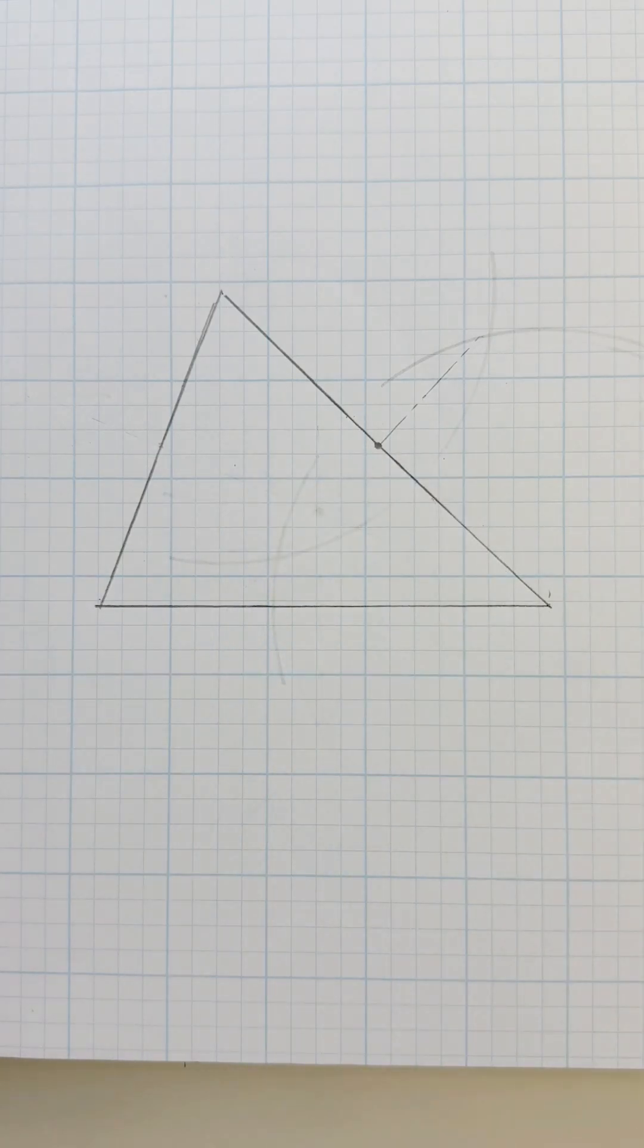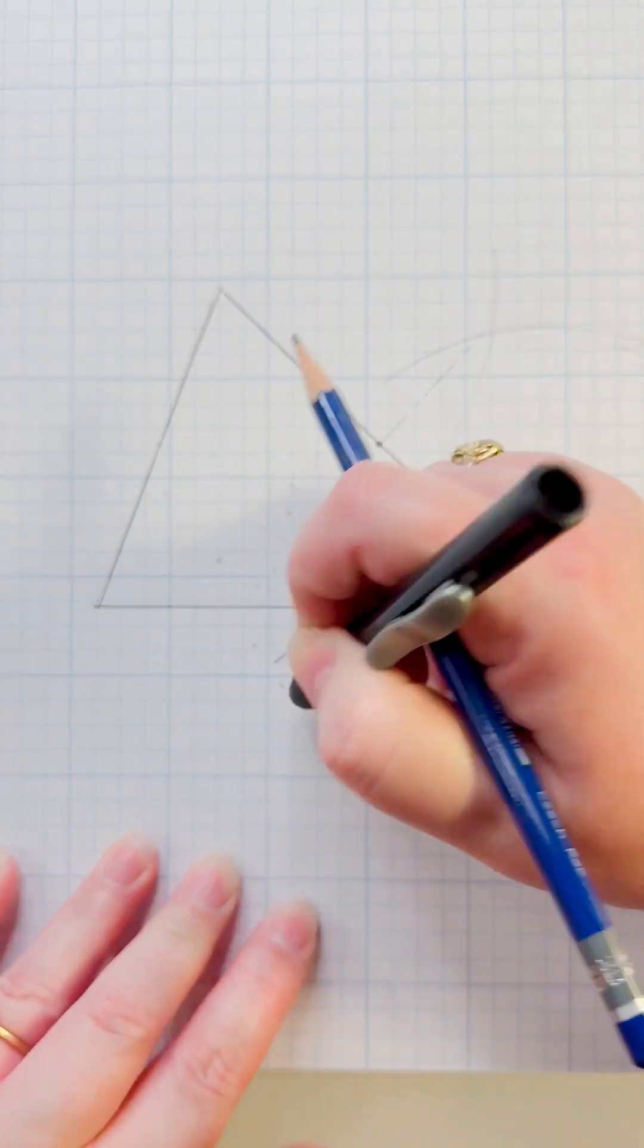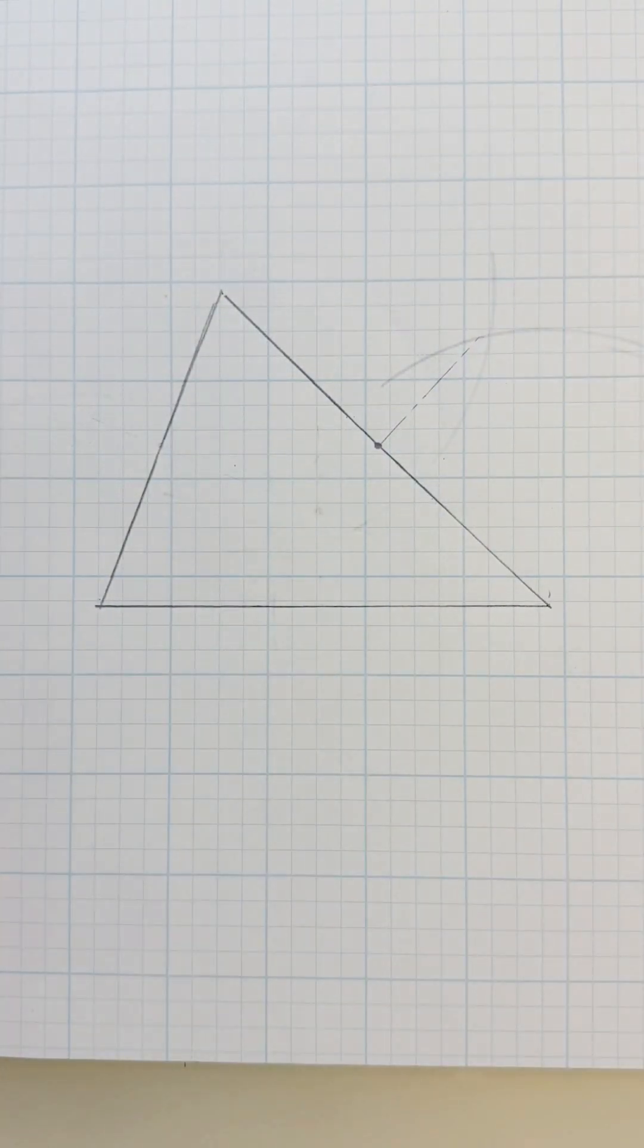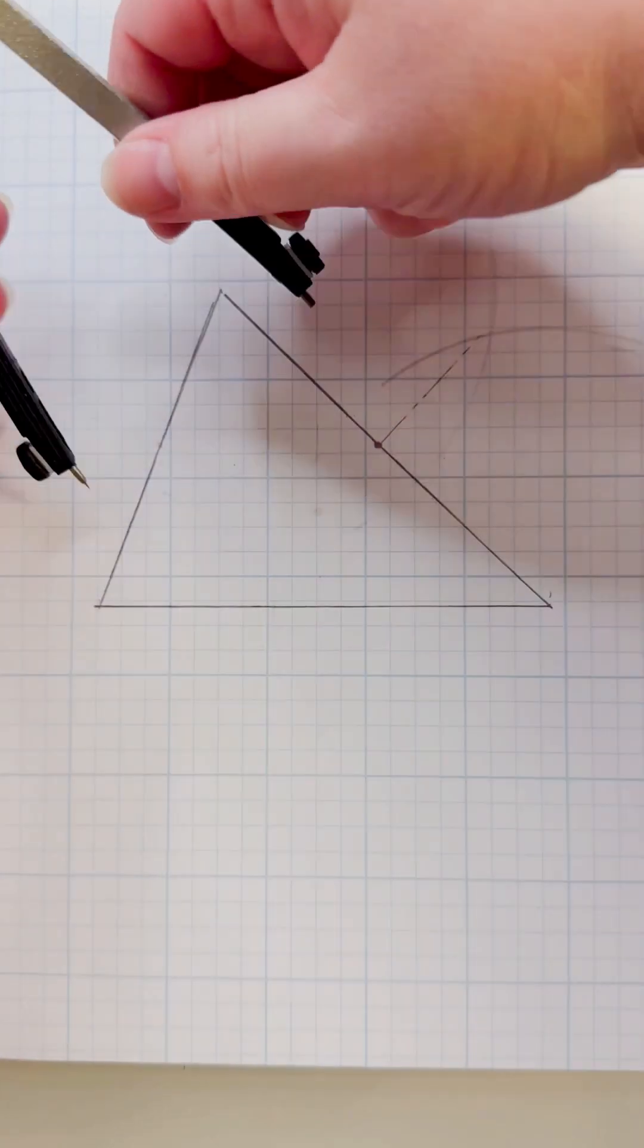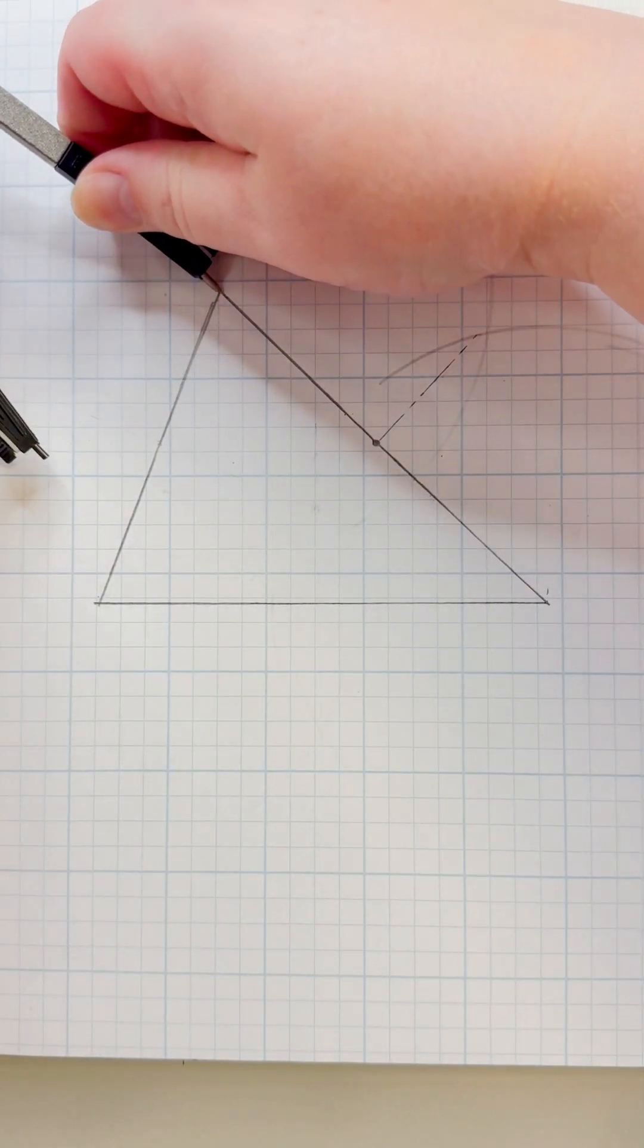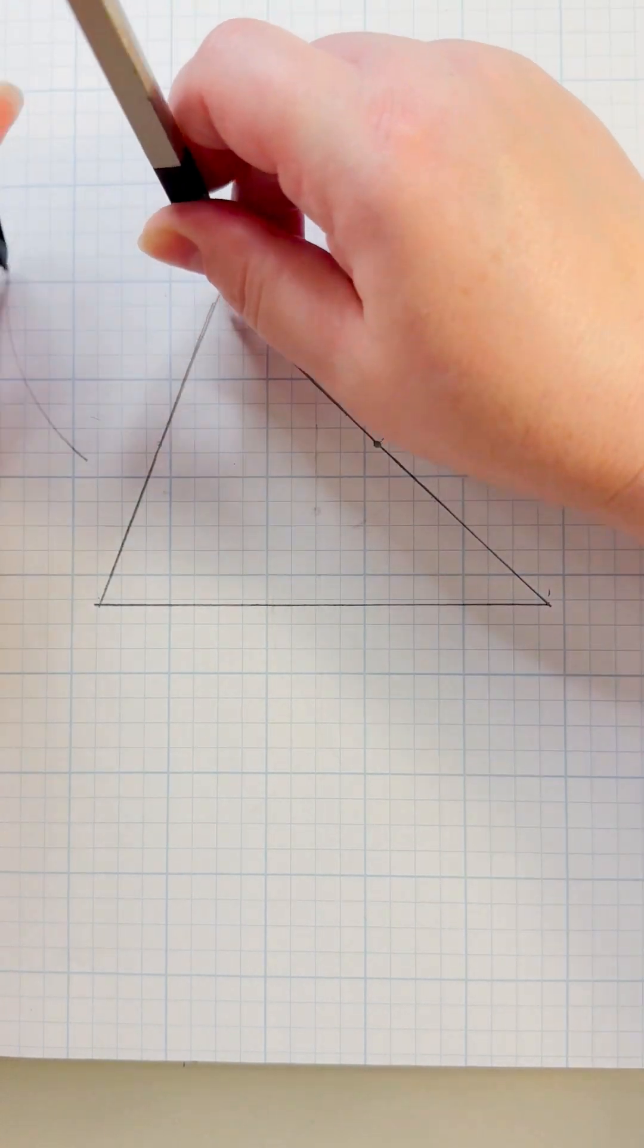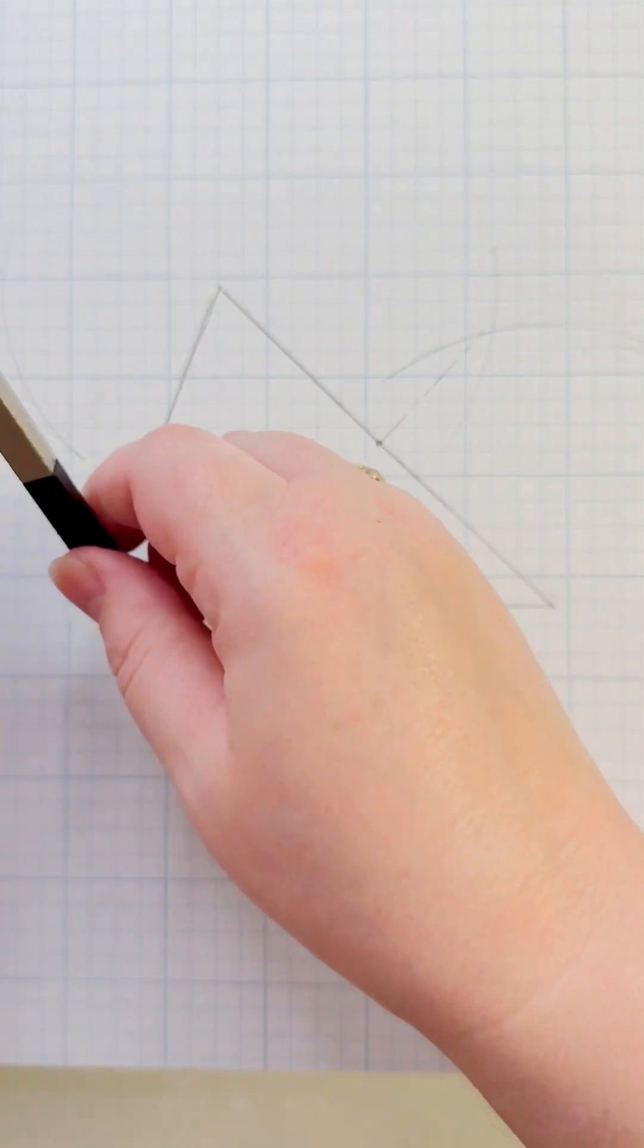Okay, let's erase these so we don't get confused. We're going to do the same thing for this line. Adjust the compass so that it's a little bit more than half. Mark above or below, move it to the other side.